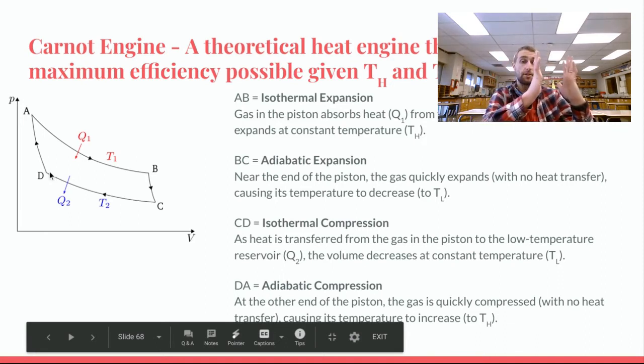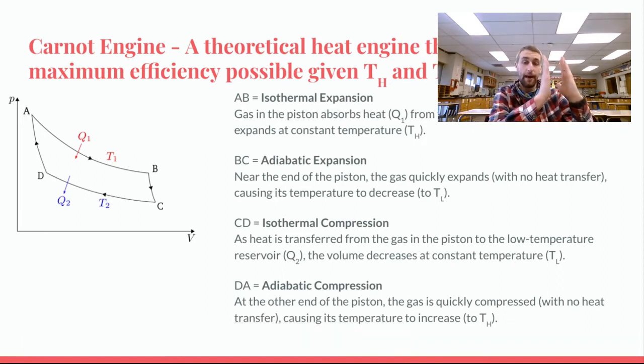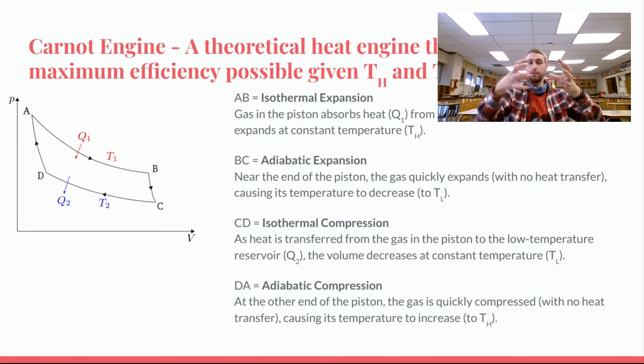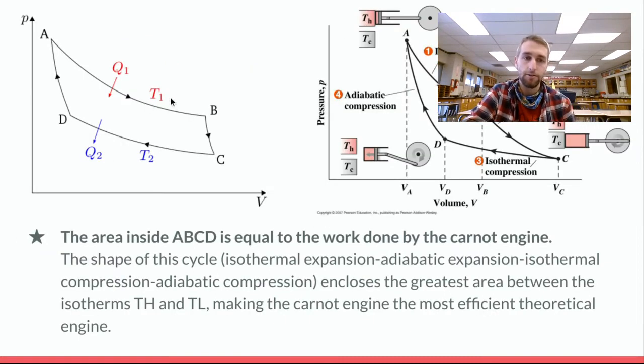And then the last part of the compression is adiabatic, happens too quickly for heat to be transferred, which means there's an increase in temperature, which bumps us back up to our original temperature that we started. So the final part D back to A is an adiabatic compression, temperature increases, and we're back to where we started with. So one full cycle of the piston expanding and compressing would be a cycle A, B, C, D back to A. And that is the Carnot cycle.